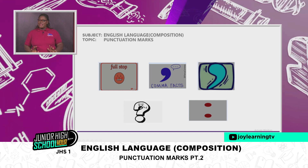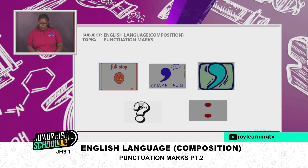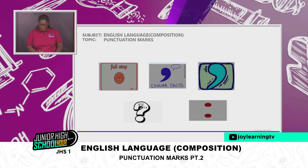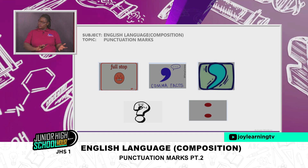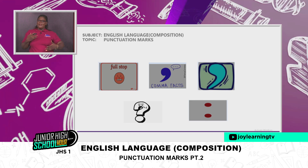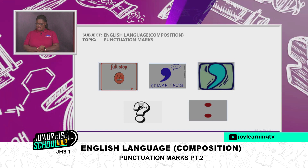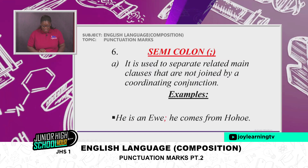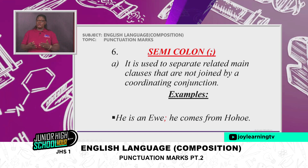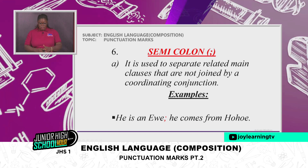So those are the ones we treated last week — full stop, comma, apostrophe, question mark, and colon. I would want to believe that I refreshed your memory on what we learned last week on punctuation marks. Now we move on to today's lesson, continuing with number six: the semicolon.